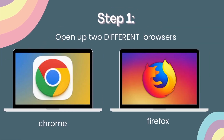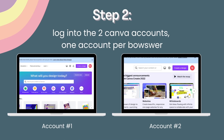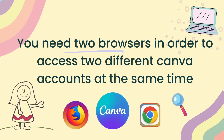Your first step is to open up two different browsers on your device or laptop. I'm using Chrome and Firefox, and you can use whatever browser you prefer such as Safari or Internet Explorer. Now log on to your two Canva accounts, one account per browser. The first account is the account that has your original file, and the second account is where you want to transfer your file. We are using two different browsers in order to access two different Canva accounts at the same time.